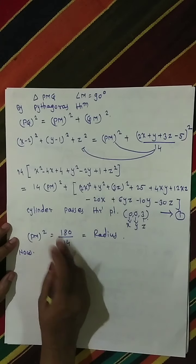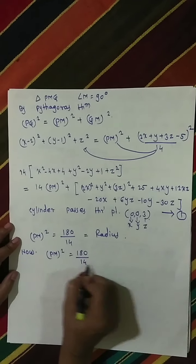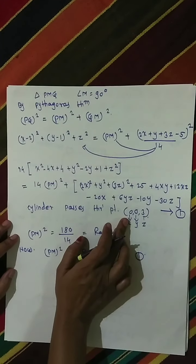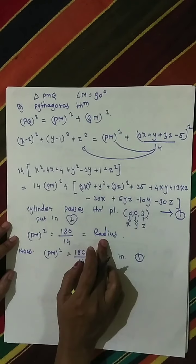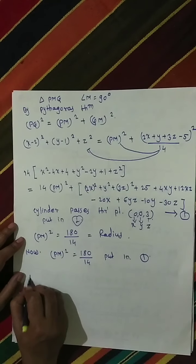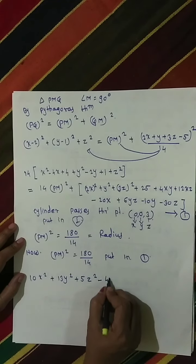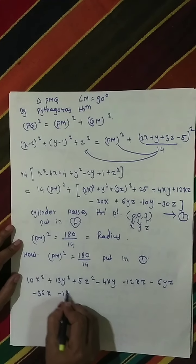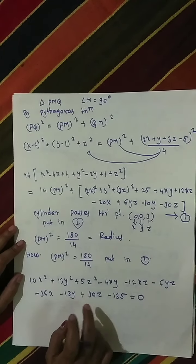To find the equation of the cylinder, substitute the value of PM squared (the radius) back into equation number 1. The required equation of the cylinder is: 10x squared plus 13y squared plus 5z squared minus 4xy minus 12xz minus 6yz minus 36x minus 18y plus 30z minus 135 equals 0.